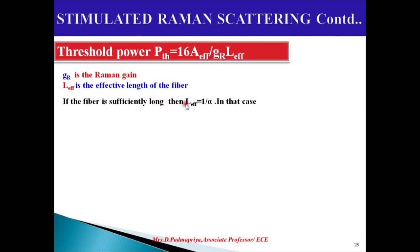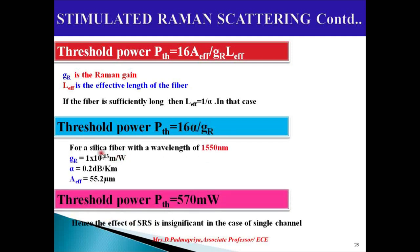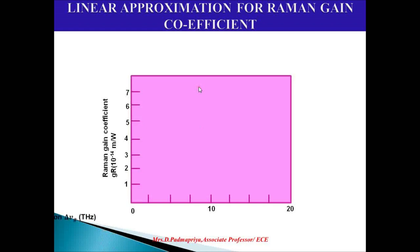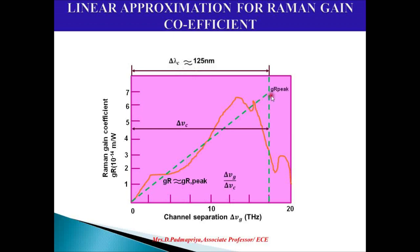For a long fiber, L_eff equals 1/α, so the threshold power becomes PTH = 16 × A_eff / G_R. For a silica fiber at 1550 nm, substituting the values of G_R, α, and A_eff gives a threshold power PTH of approximately 570 mW. Hence the effect of SRS is insignificant for a single channel. The graph shows the linear approximation for the Raman gain coefficient, with Raman gain increasing linearly with frequency offset.